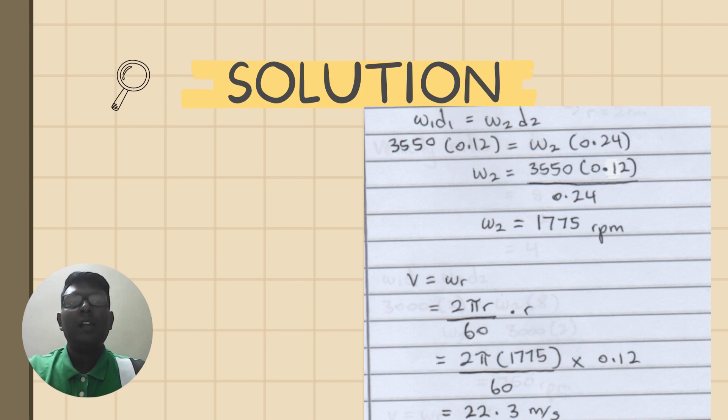Place all the values into the formula and you will get the speed operation of the compressor with the value of 1775 rpm. Then we will be searching for the velocity of the belt with the formula of the speed rate...